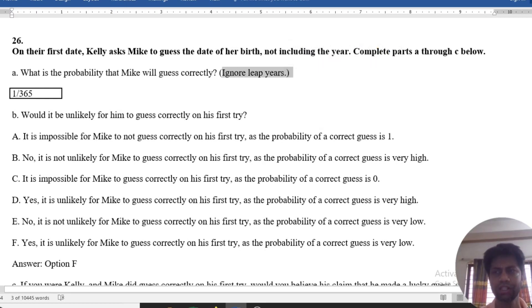If we ignore leap years, there are 365 days in a year. So the probability would be 1 by 365. The probability would be 1 by 365 days.